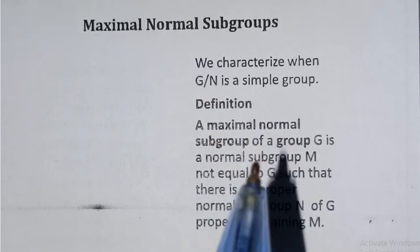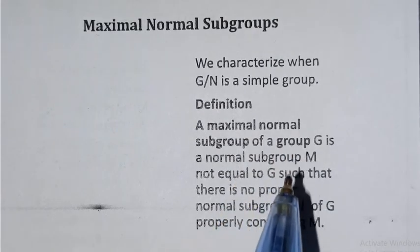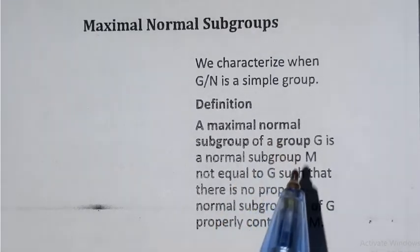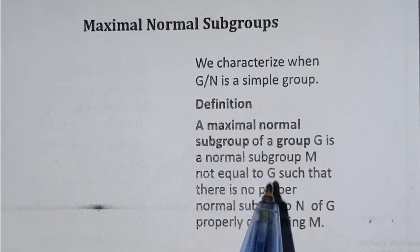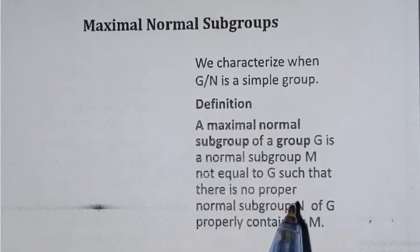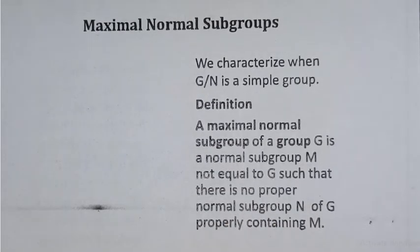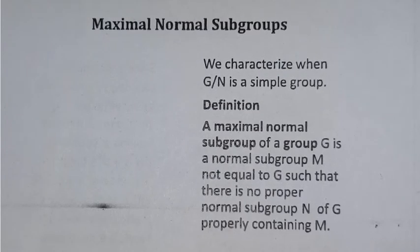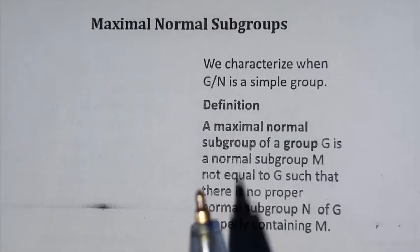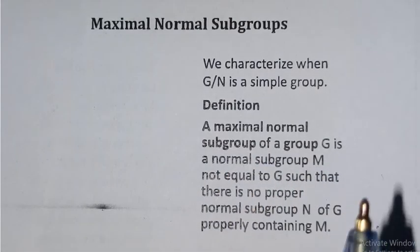A maximal normal subgroup of a group G is a normal subgroup M, where M is not equal to G, such that there is no proper normal subgroup N of G that properly contains M.